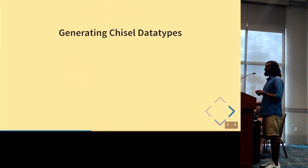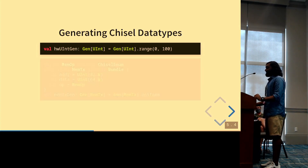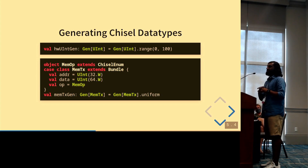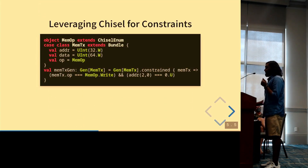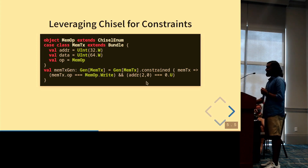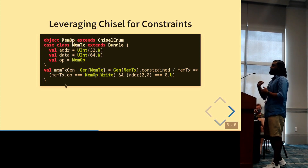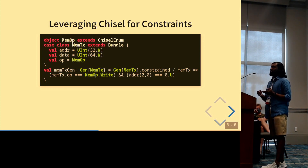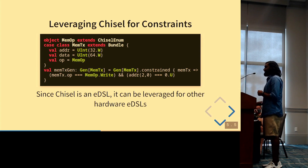Moving past Scala-level data types, you can also generate Chisel data types — a Gen[UInt] for a fixed-width hardware unsigned integer, or a Chisel bundle (essentially a hardware struct) with various fixed-width fields and enumerations. You can also leverage Chisel for constraints: for example, generating a MemTx bundle such that memtx.op is a write and the bottom two bits of the address are zero. The constraint is expressed as a closure containing a Chisel circuit — any arbitrary Chisel circuit including instantiated modules and combinational logic from existing Chisel libraries. Since Chisel is an EDSL, we can leverage it to create other hardware DSLs.